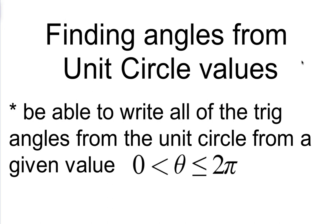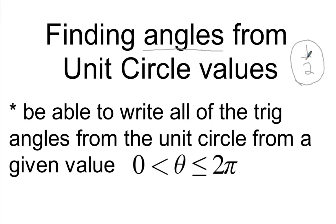Welcome to this video. We're talking about finding angles from unit circle values. So we're going to be given an answer — something from the unit circle — and you're going to figure out what the angle is that has that as its answer. Like maybe I give you the answer 1/2, and you're going to tell me all the places on the unit circle where the coordinate is 1/2. Make sure you have your unit circle with you, and we're going to be doing it with just one rotation around the unit circle.